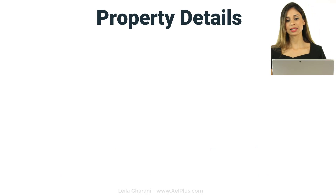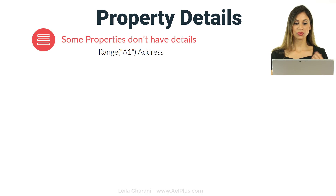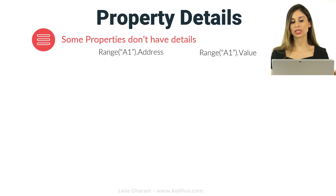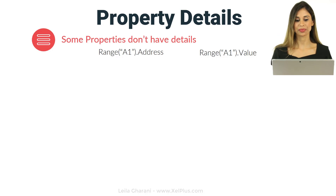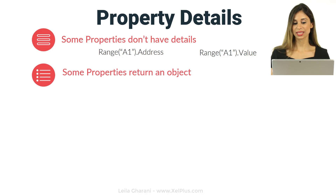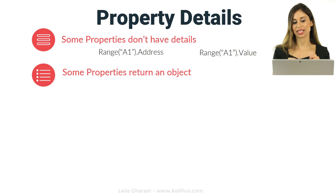Let's take a look at this in Excel and how that would look. For one without details, that would be something like range(A1).address or range(A1).value — you get the cell address or you get the cell value. Now you can also have properties with details, and this is something called when properties return an object, which can be confusing.